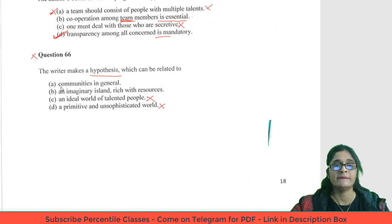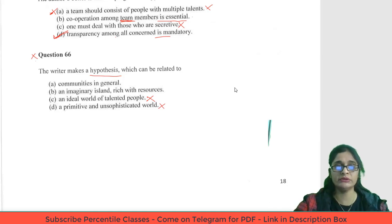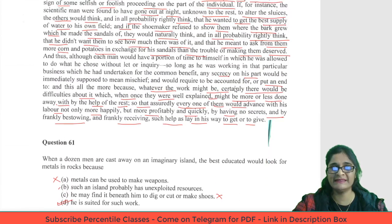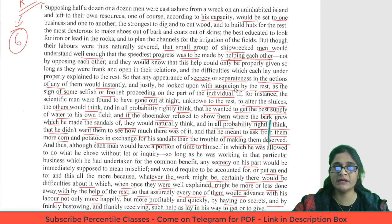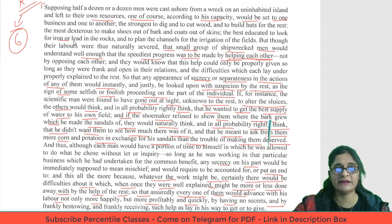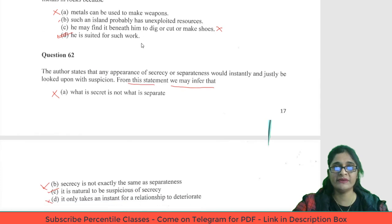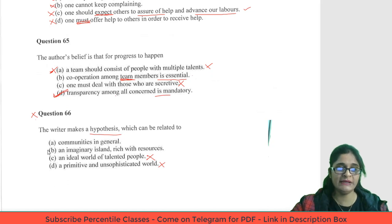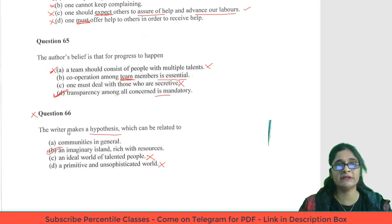For question 66, communities in general versus an imaginary island rich with resources — both options are very close. The author expected that the island has a lot of resources — iron and lead in the rocks. So the author has given an example of an imaginary island which has a lot of resources. Therefore, the answer should be B — an imaginary island rich with resources.